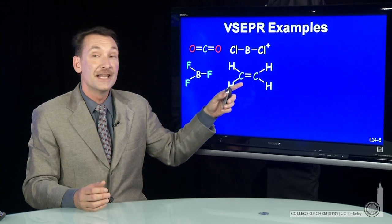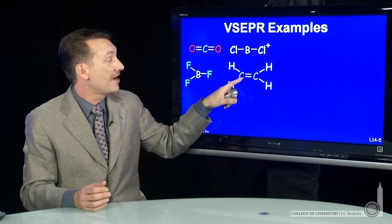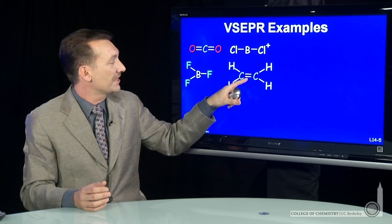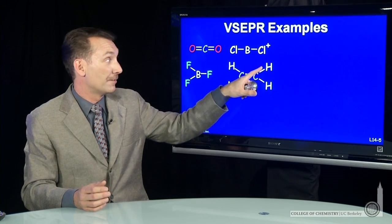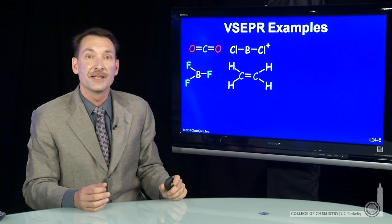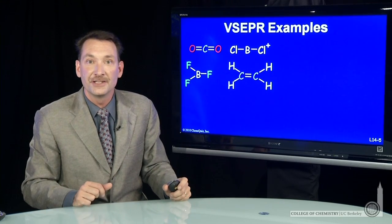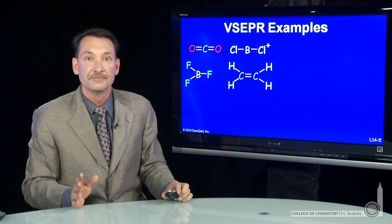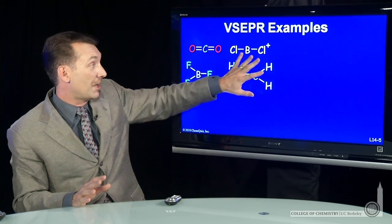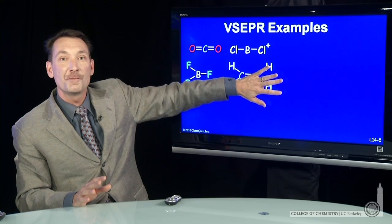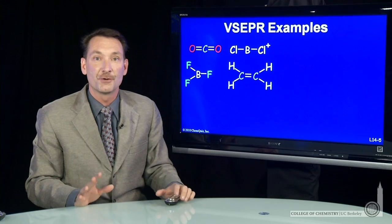The carbons in ethylene each have steric number three. This carbon has to accommodate one, two, three things. This carbon also accommodates one, two, three things. All the bond angles in this molecule are 120 degrees. Interestingly, this molecule is also planar. All the atoms lie in one plane with bond angles of 120 degrees.